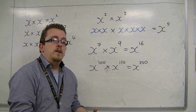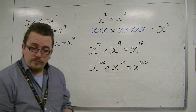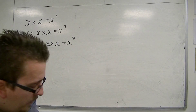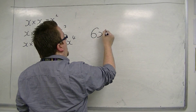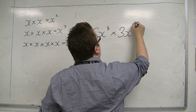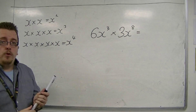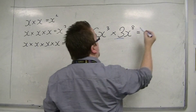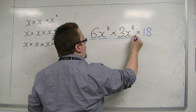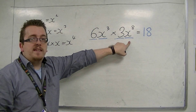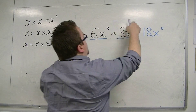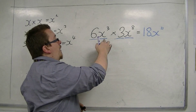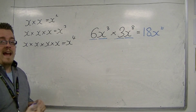So if you are multiplying, you can add the powers together. And what that allows you to do is handle something like 6x cubed times 3x to the 8. You deal with the numbers first: 6 times 3 is 18. Then deal with the algebra: x cubed times x to the 8 would be x to the 11, because 3 plus 8 is 11. So when you're multiplying and both terms have x's, you can add the powers.